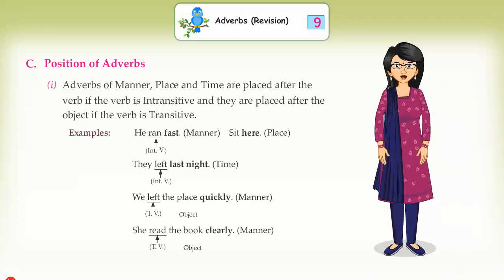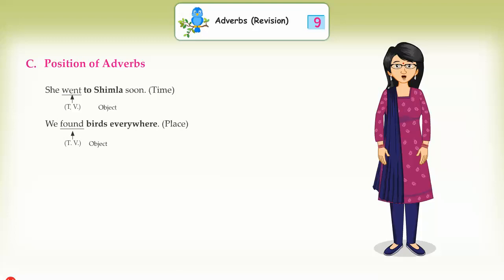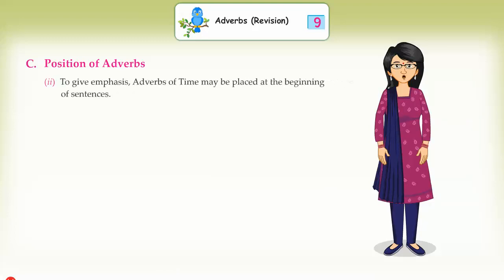Further examples: She read the book clearly (transitive verb, manner). She went to Shimla soon (transitive verb, time). We found birds everywhere (transitive verb, place). (2) To give emphasis, adverbs of time may be placed at the beginning of sentences. Examples: Yesterday he was not here. Now I won't stay here.